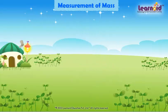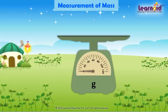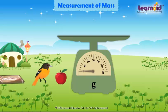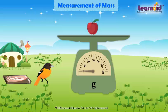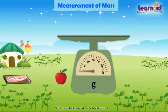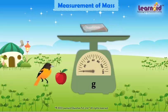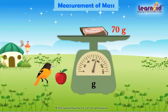Let's find the weight of these objects. Weight of apple is 80 gram. Weight of bird is 90 gram. Weight of chocolate is 70 gram.